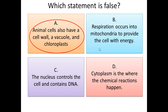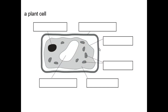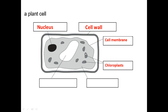This is how a plant cell looks. The organelles inside the plant cell are: the nucleus on the inner side of the cell, the cell wall surrounding the whole cell, the cell membrane, the chloroplasts, the cytoplasm which is the jelly, and the vacuole, the structure in the middle.